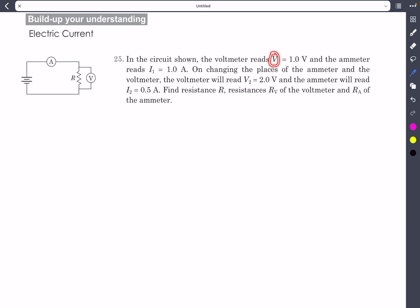The question states that we have a circuit in which the voltmeter reads V₁ = 1.0 V and the ammeter reads I₁ = 1.0 A. On changing the places of the ammeter and the voltmeter, the voltmeter now reads V₂ and the ammeter reads I₂. We have to find the resistance of the resistor given in the picture, and the resistance of the ammeter and the voltmeter as well.